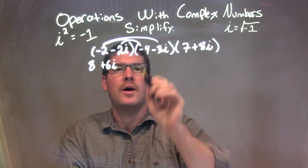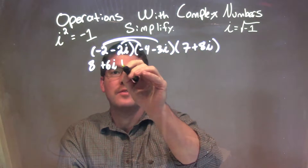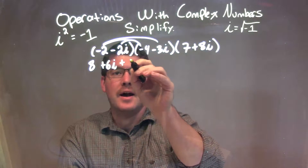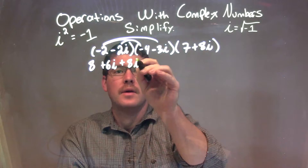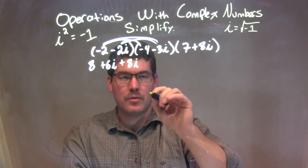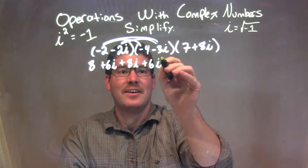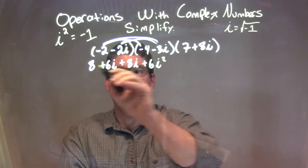Negative 2i times negative 4 is a positive 8i, and negative 2i times negative 3i is a positive 6i squared.